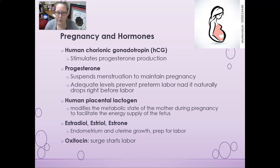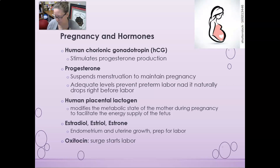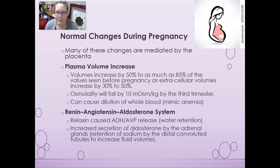A surge of oxytocin will start labor, and it can be given in synthetic form to induce labor. Oxytocin also has a role after birth to facilitate bonding between mother and child. When an infant breastfeeds, there is a release of oxytocin from the mom to bond the mom to the baby.